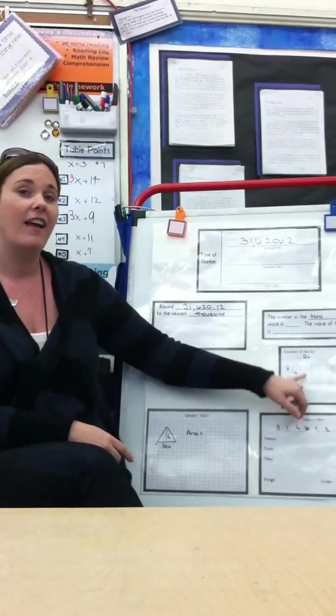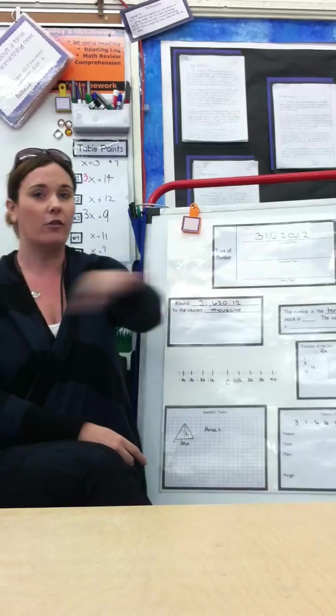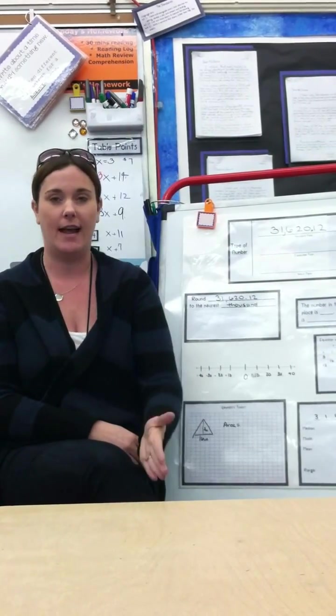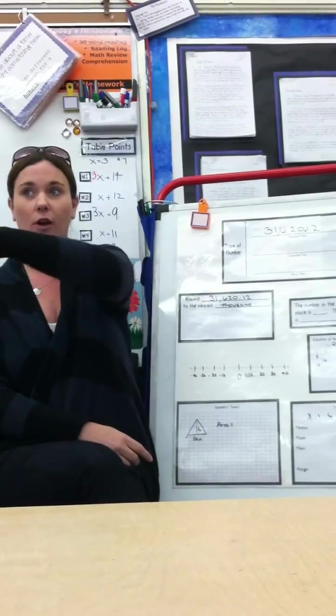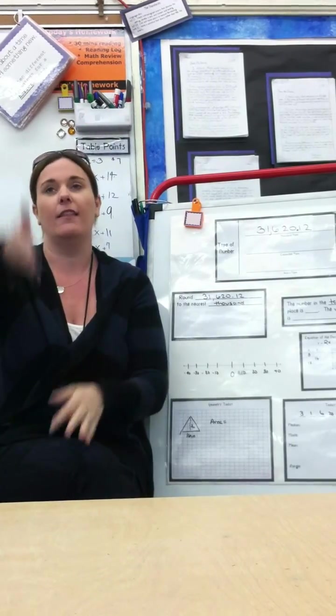When we do the equation of the day and we're going to go graphing the coordinate points, we go across, then up or down. So the kids know we have to go across or back across. And then we go up or down. So we do the X and then the Y.